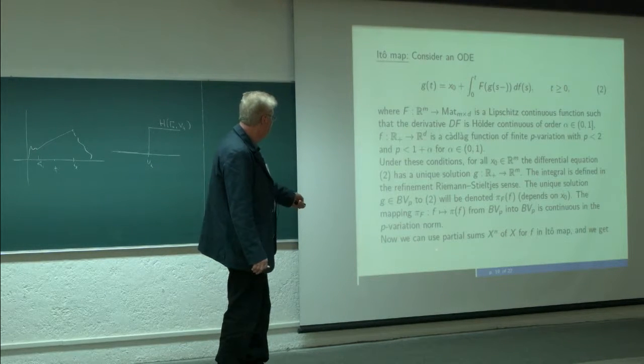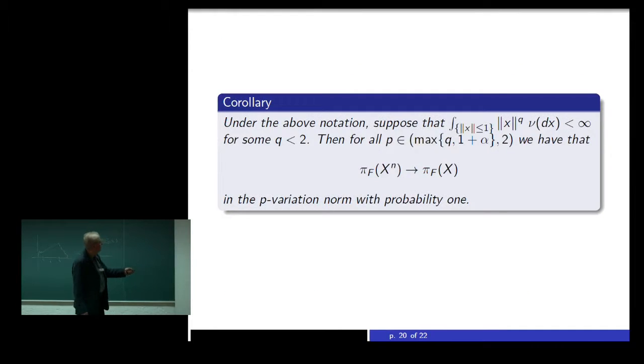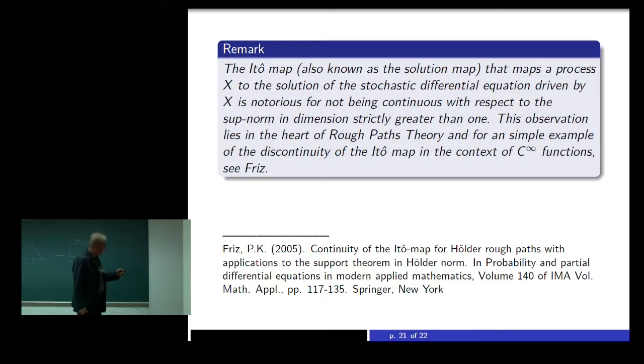So now we can use the partial sum x_n of x for f in the Itô map, and we get this. Under the above notation, suppose that we have the q-th norm of Lévy measure in the neighborhood of zero finite for some q less than 2. Then for all p in this region, we have that the Itô map is continuous in the p-variation norm. So with probability one, the solutions with probability one converge to the solution with respect to x, which we can define x by the limit also.